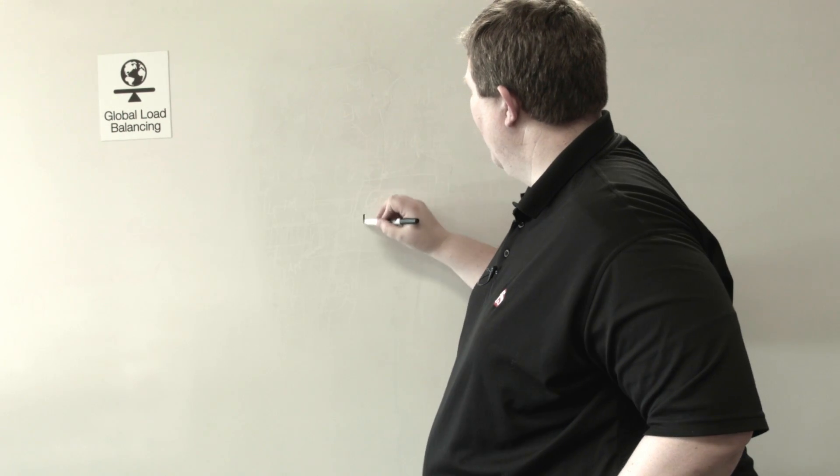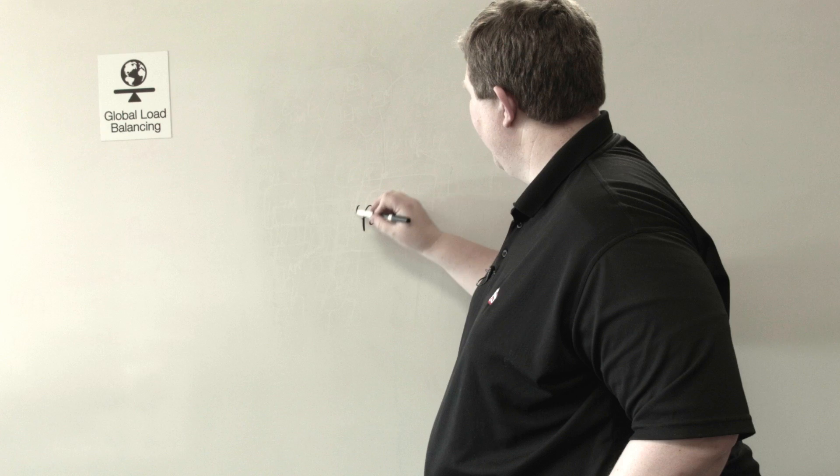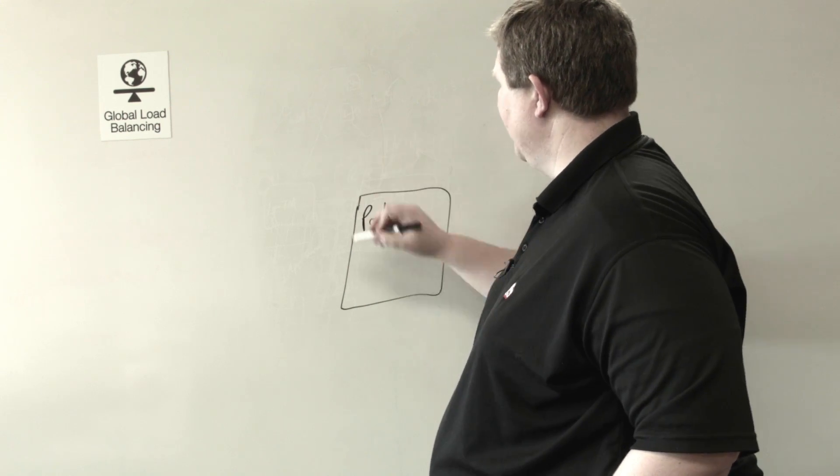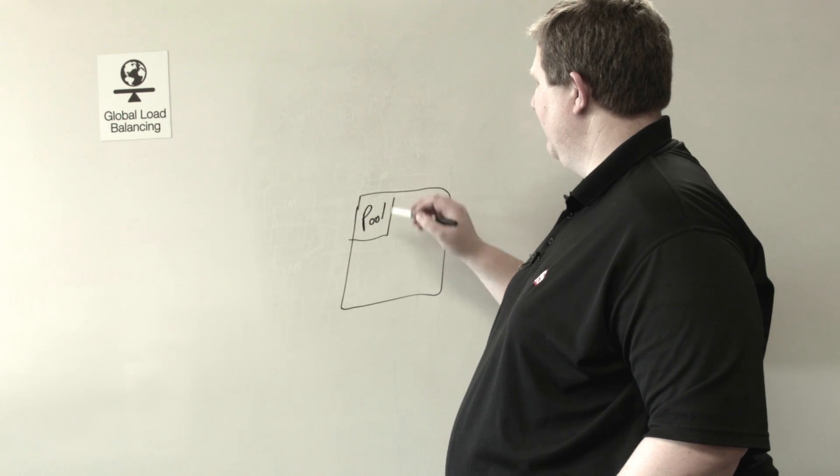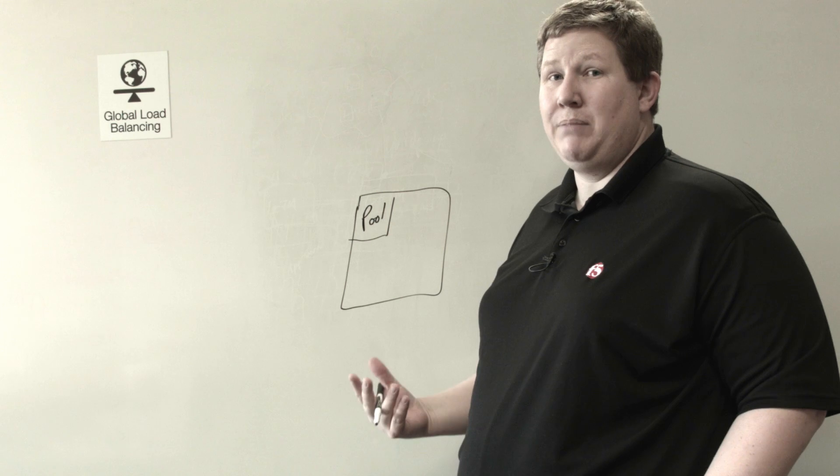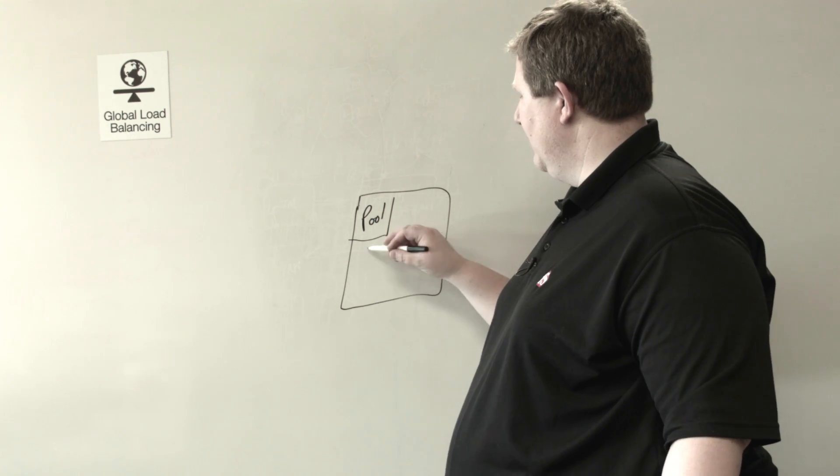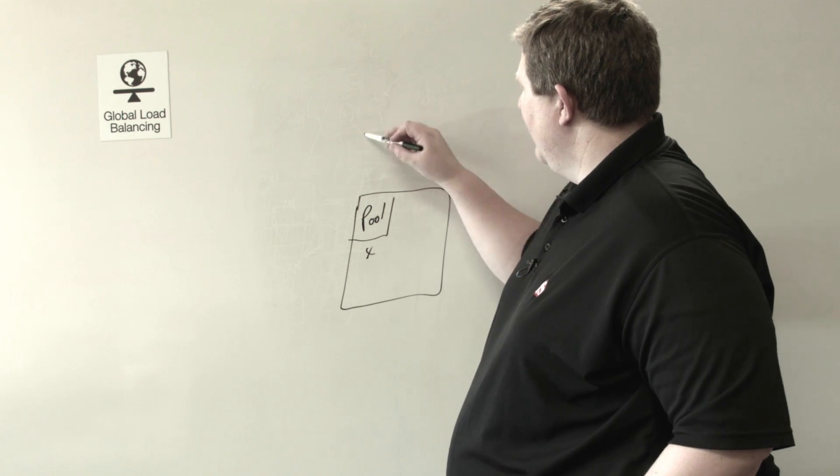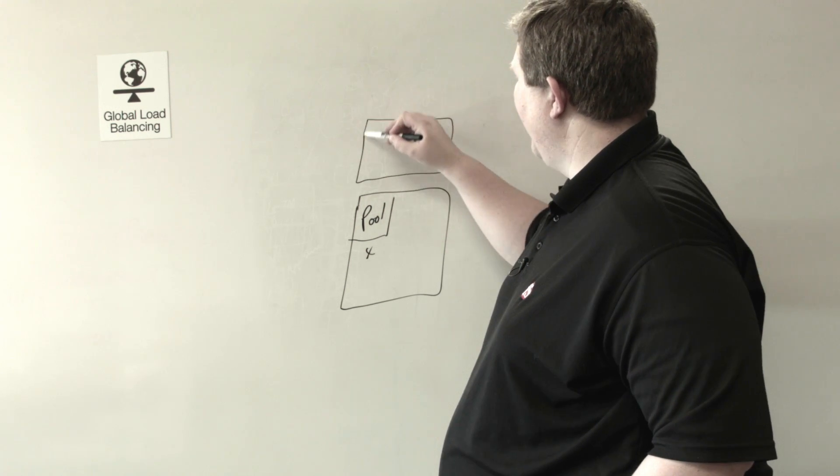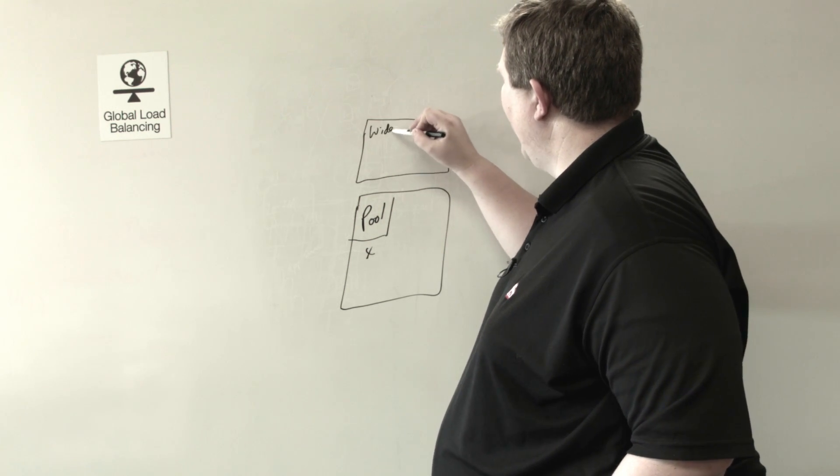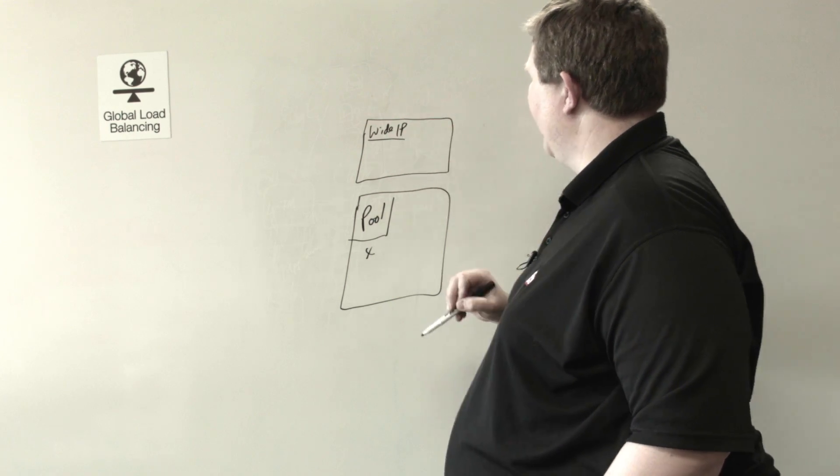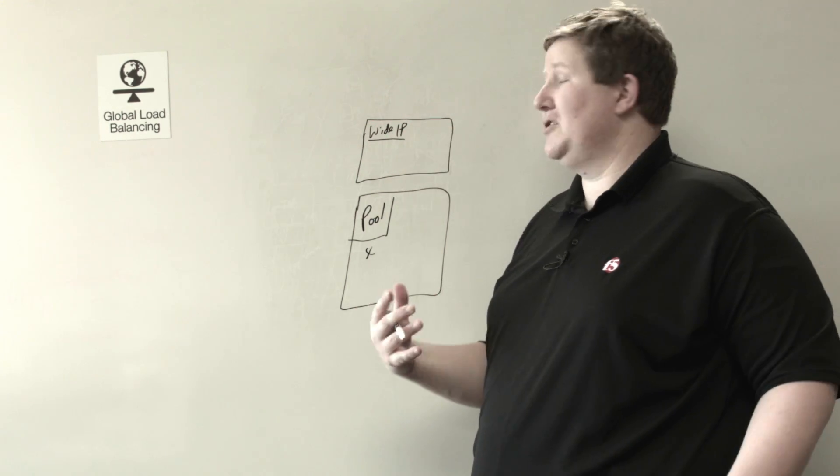GTM has the pool, and at the pool level, there are a bunch of algorithms to make a decision on which pool member gets the request. But also, GTM has the wide IP level. At the wide IP level, that's where the first decision is made.